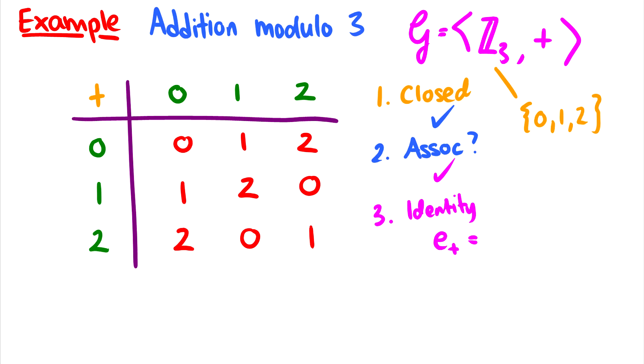So a good place to start is 0, of course, because we know with addition, 0 is usually our identity element. So if we take 0+0, we get 0 back. 0+1, we get 1 back. 0+2, we get 2 back. And similarly on the other line, 1+0 is 1, 2+0 is 2. So yeah, 0 is going to be our identity element.